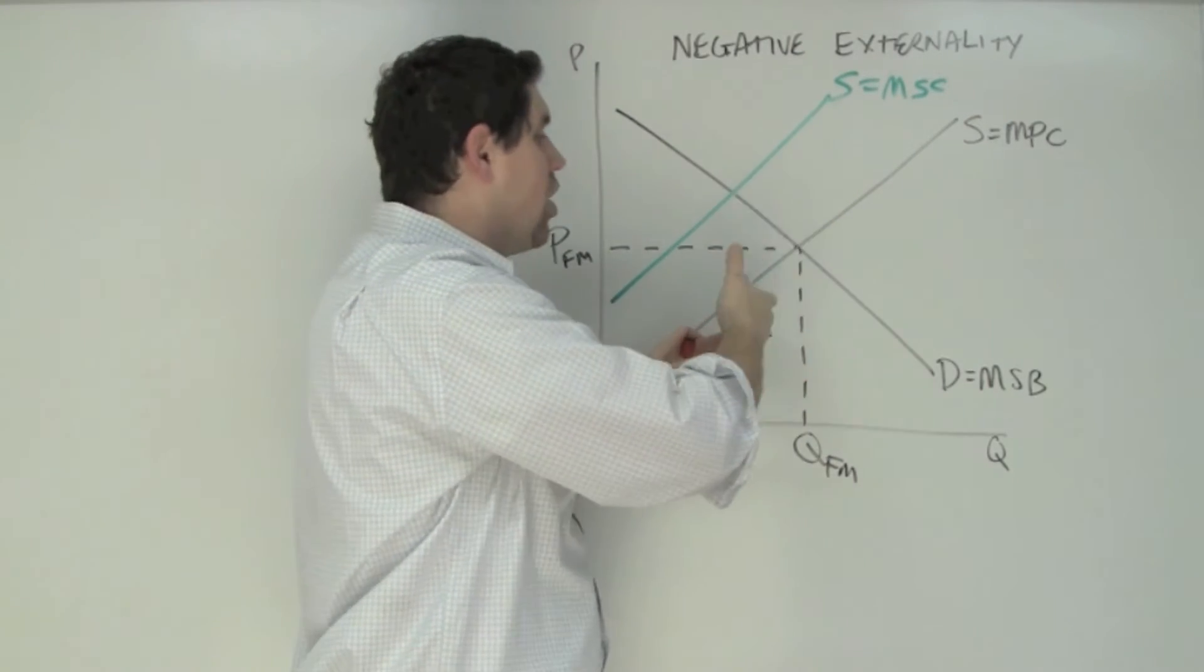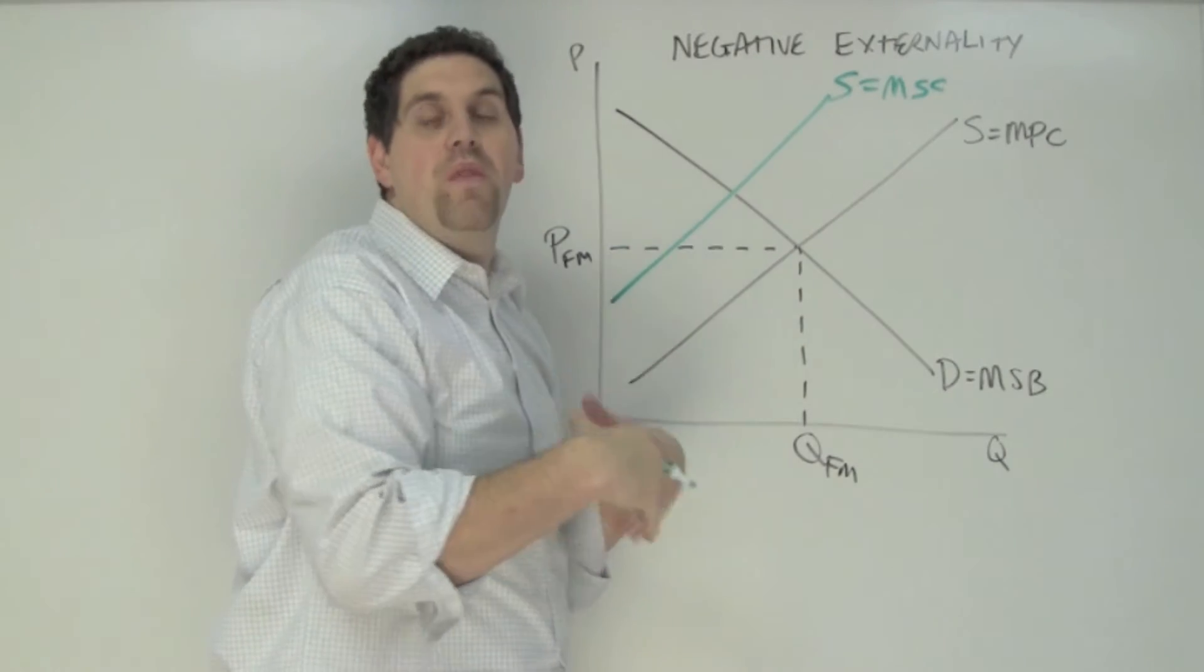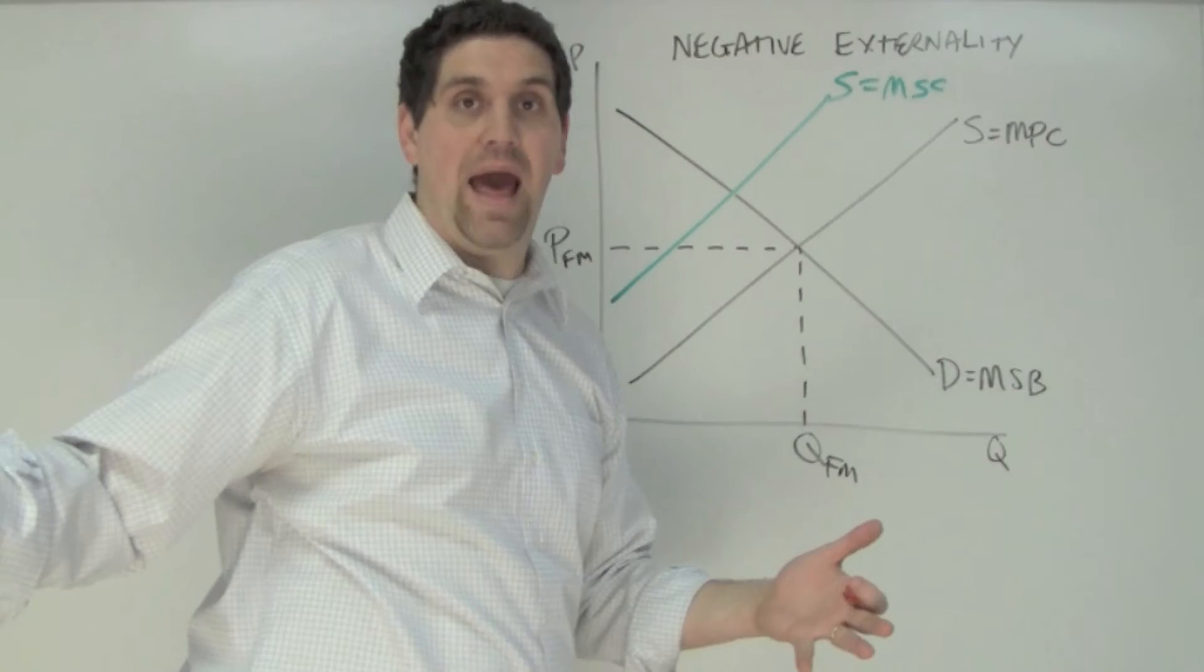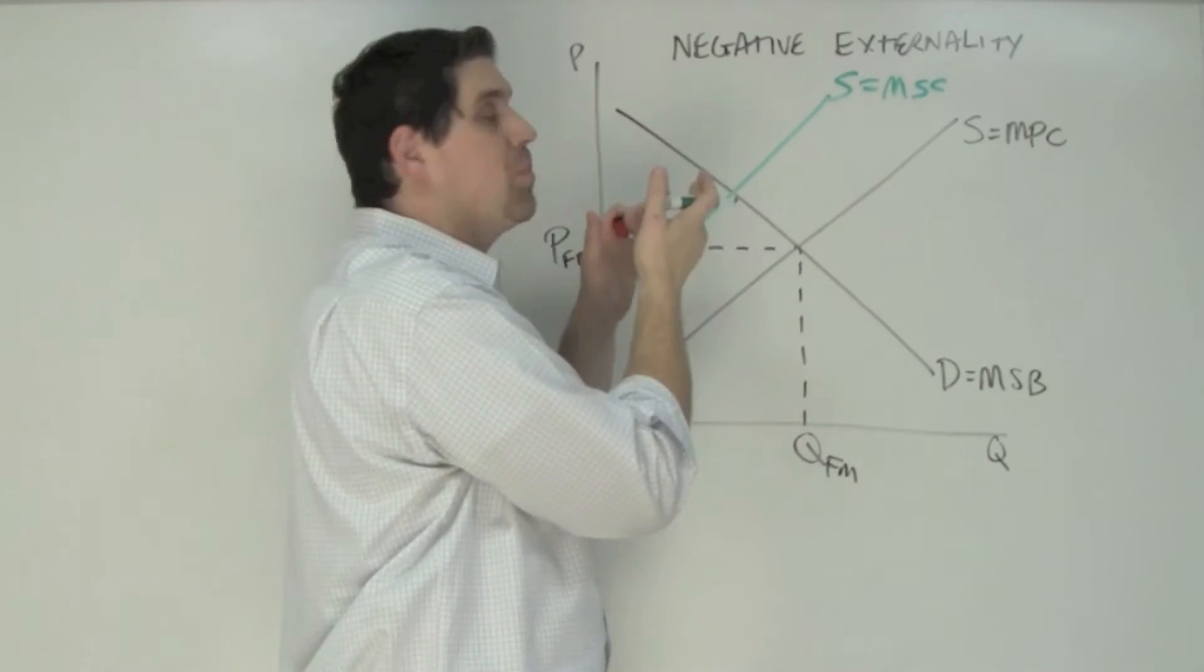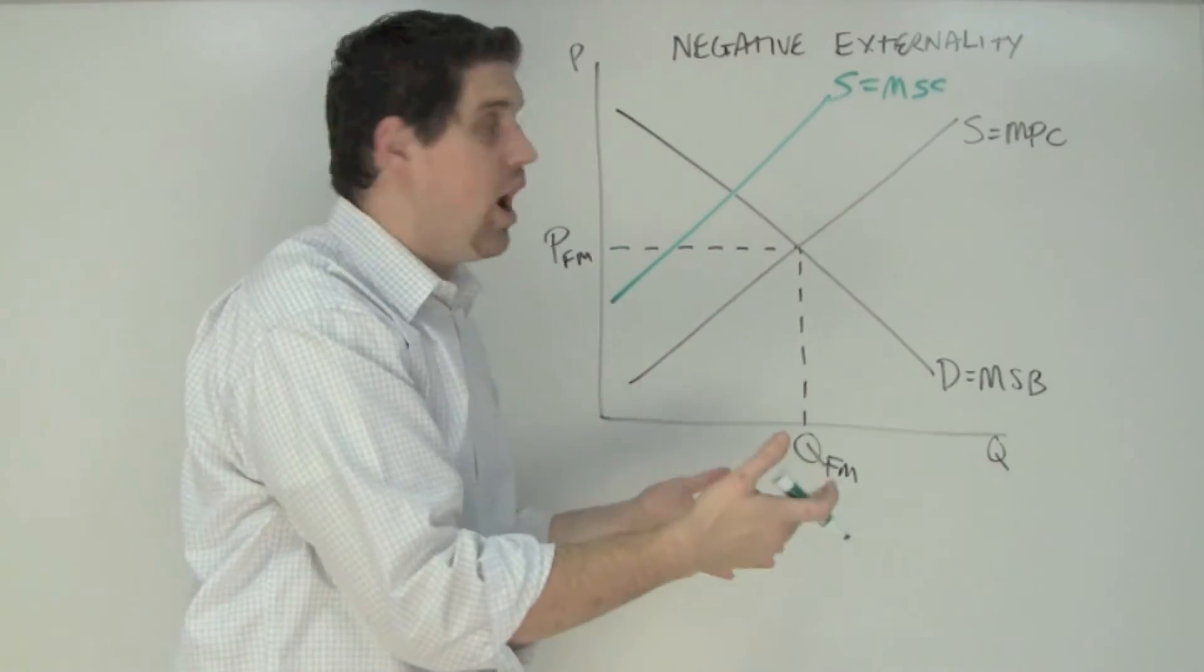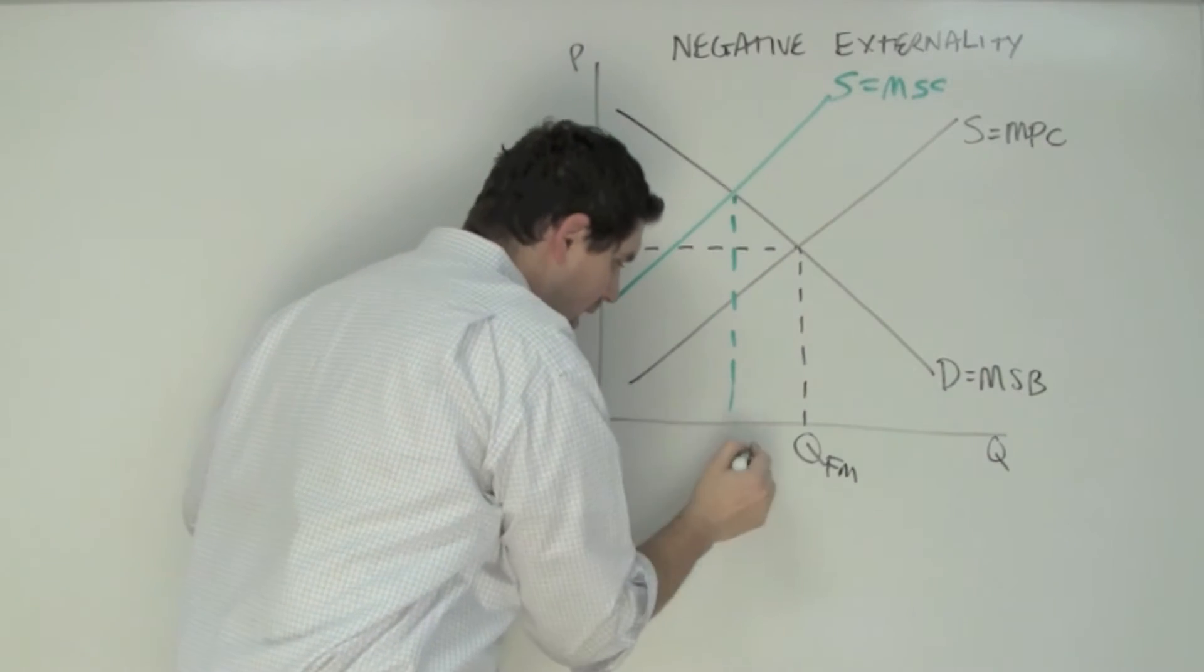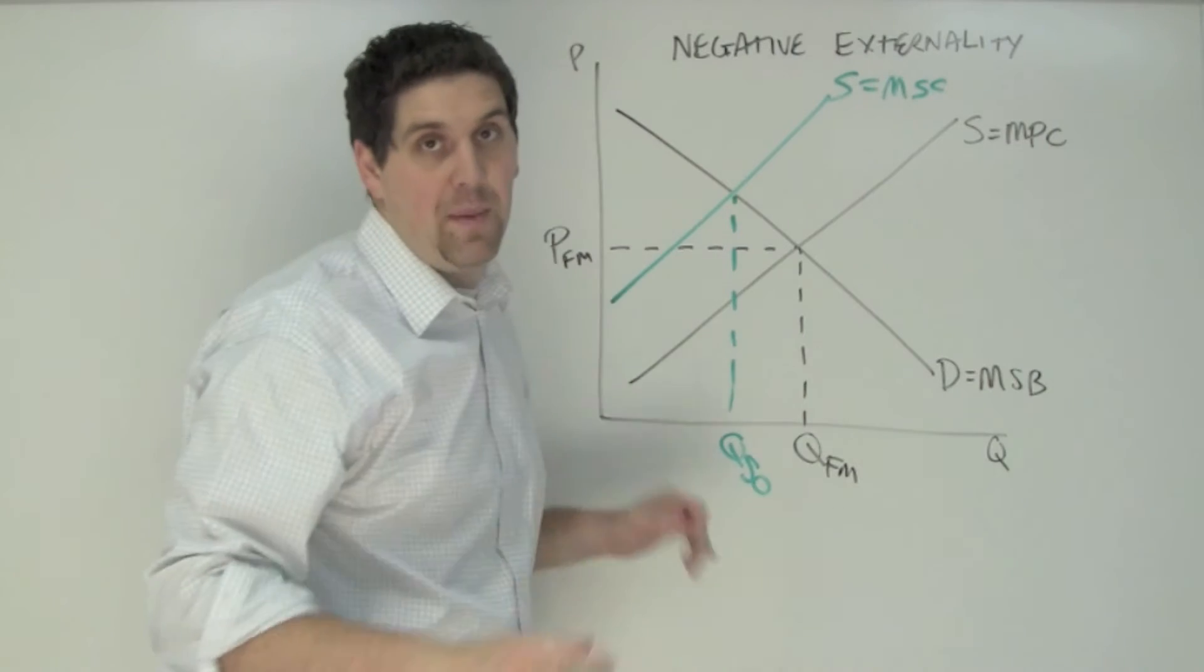Remember, the marginal private cost is the cost that firms factor in when they decide to produce. They ignore the external cost of pollution and other things like that. So this second curve represents where supply should be if you factor in these external costs. Society wants the output where marginal social benefit equals marginal social cost. So right here is the quantity socially optimal.